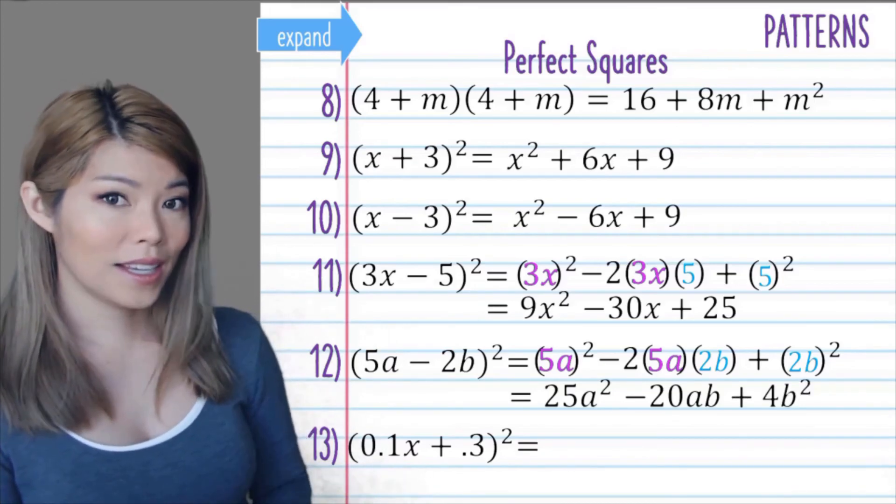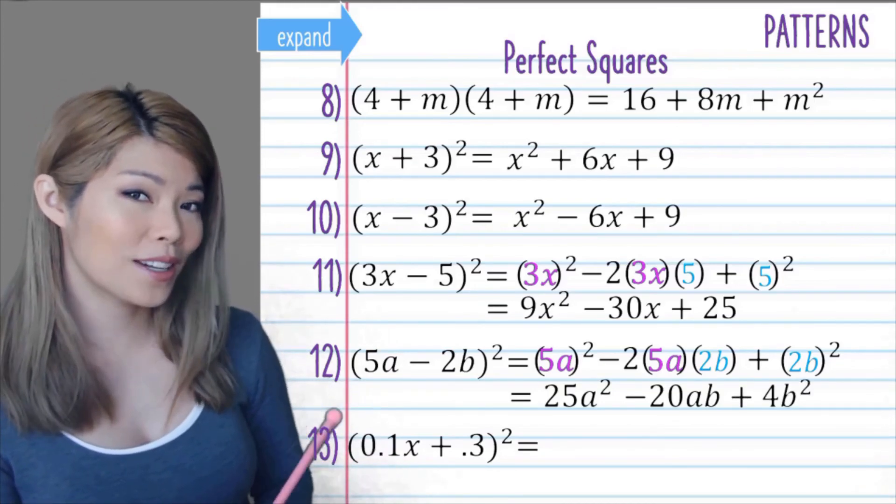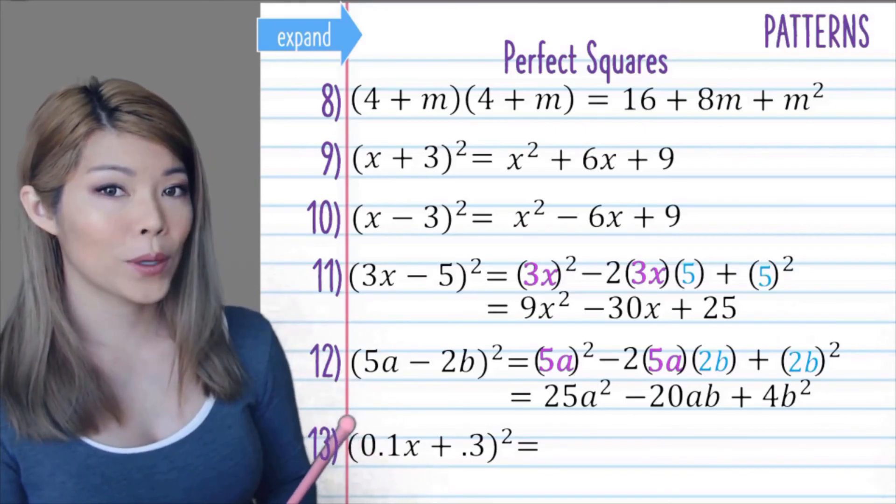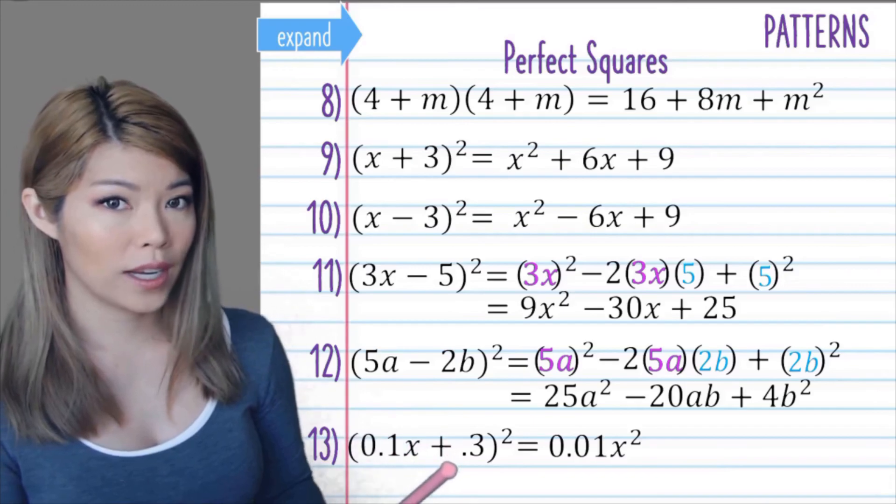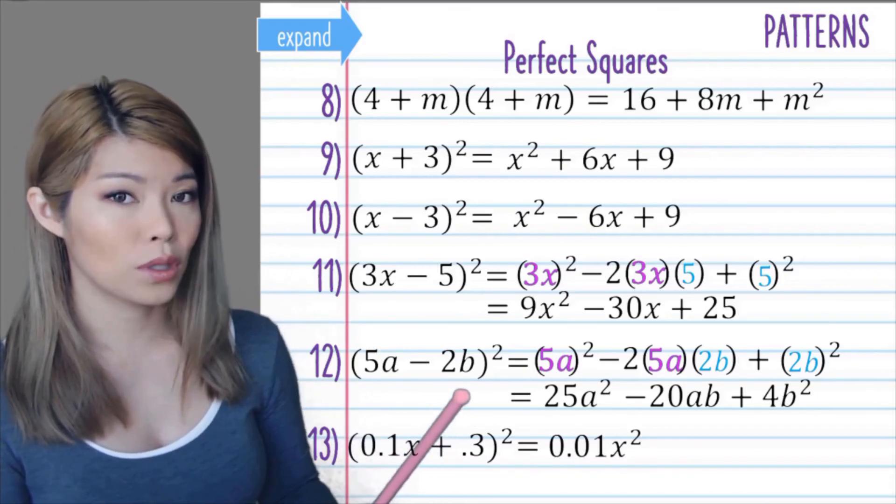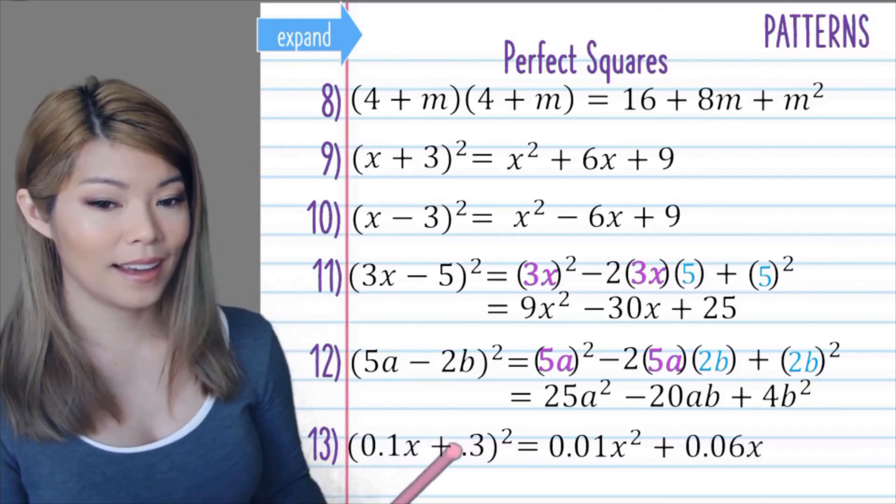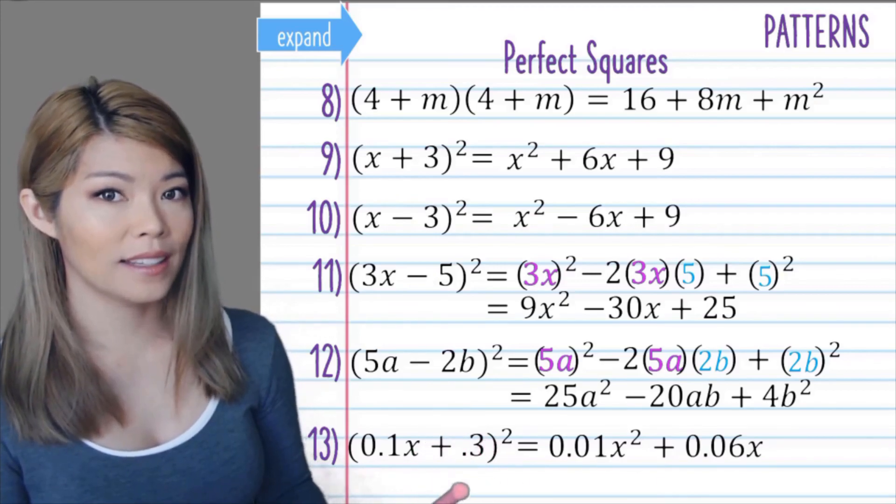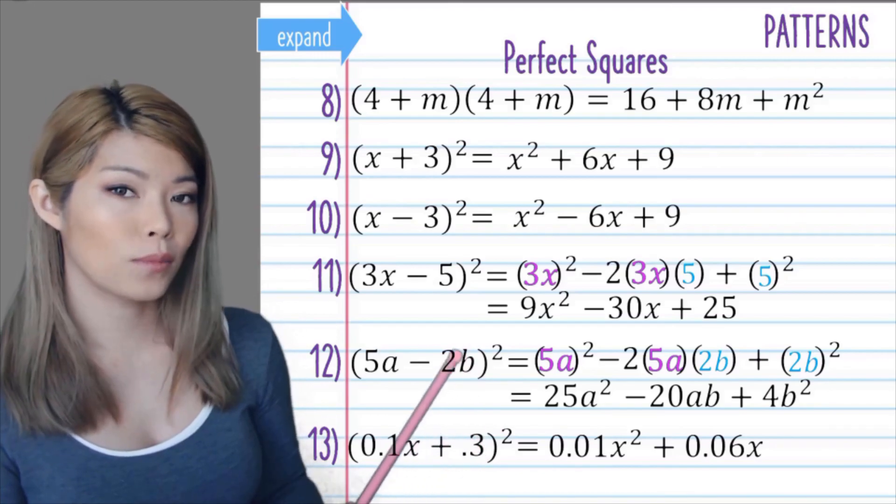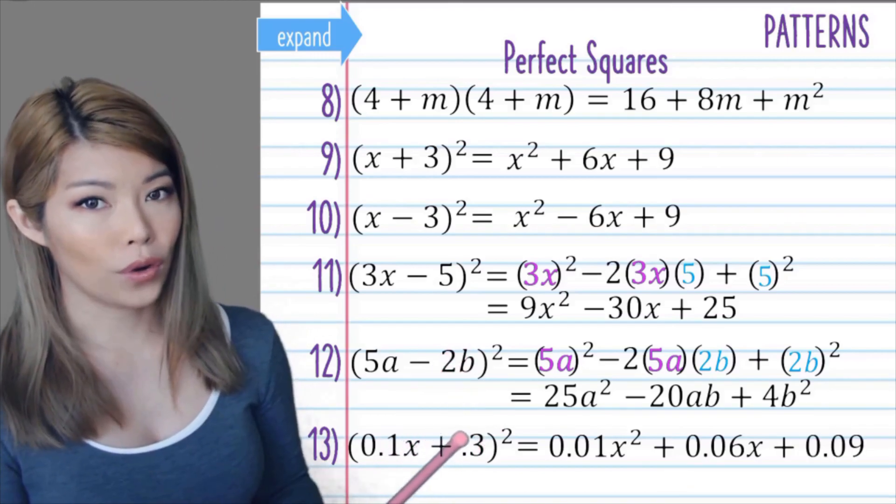And lastly, you can use a calculator for this one or you can try to do it in your head. 0.1 times 0.1 is 0.01x squared. 0.1 times 0.3 is 0.03 times 2 is 0.06x. That's our middle term. And lastly, 0.3 squared is, well, 3 times 3 is 9 and we have to move the decimal point twice, so 0.09.